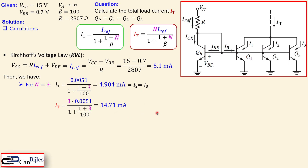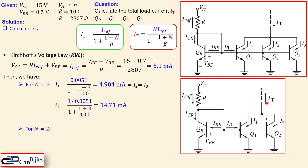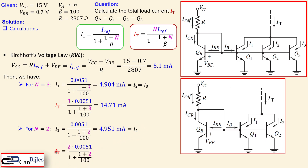For N equals 2, with only Q1 and Q2 in parallel, I1 equals IRF divided by (1 plus 2 over 100), which is approximately 4.951 mA — closer to 5 mA since the error is smaller with fewer transistors. I1 equals I2 in this case. The total load current IT equals two times I1, which is approximately 9.903 mA.